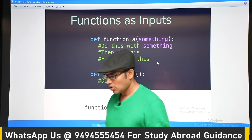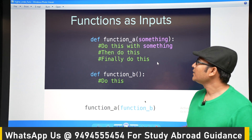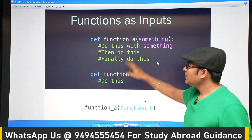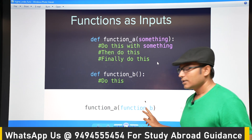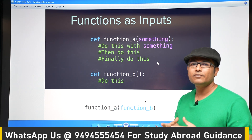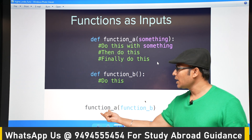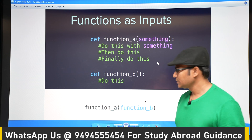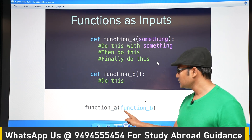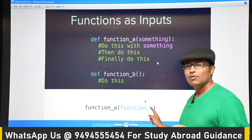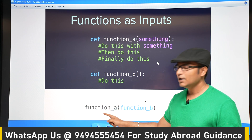Before going to the next concept, you have to understand higher order functions. A function can take another function as an argument. Let's say there is a function A and a function B, and you are calling function A by passing function B. So a function can take another function as an input — not a value, but a function itself. Then function A is called a higher order function. One important thing to observe: when you are passing a function to another function, you do not write parentheses. Only the function name is given without parentheses. If you give parentheses, the function executes immediately, but you want to pass it as an argument.